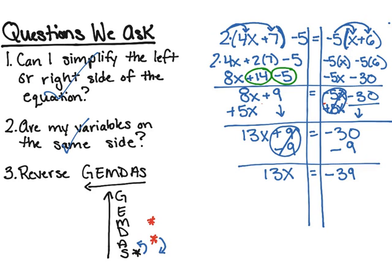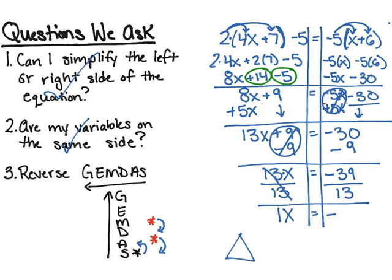The next step is that I have a multiplication symbol between my coefficient and my variable — between my 13 and my x. The inverse of multiplication is division. So I'm going to divide both sides by 13. 13 divided by 13 cancels out and equals 1, so I rewrite that as 1x. On the right side, negative 39 divided by 13 — a negative divided by a positive gives me a negative, and 39 divided by 13 is 3. So x equals negative 3. That is my final answer.